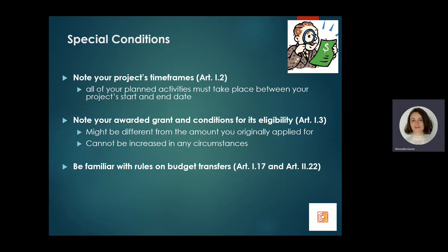Article 1.3 specifies the amount of your awarded grant, which might be slightly different from the amount you originally applied for. During evaluation, the national agency assesses your requests and might introduce reductions when some requested costs are ineligible or were incorrectly applied. Please note the awarded grant cannot be increased in any circumstances. Article 1.17 provides details on possible budget transfers without a formal amendment to the grant agreement.